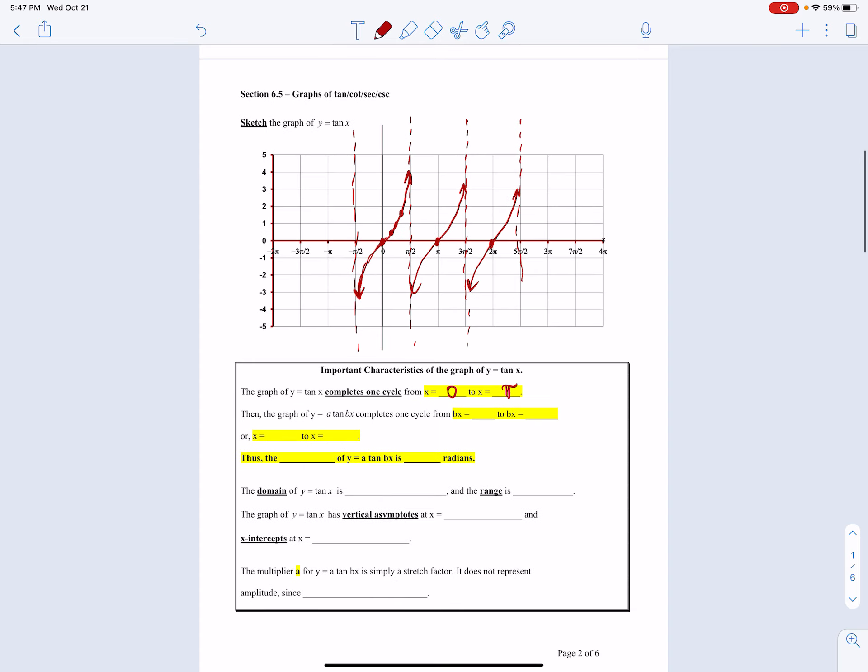If we replace x with bx, the angle has to go from 0 to π, which means 0 to π/b. So the period of y = tan(bx) is π/b radians, as opposed to 2π/b for sine and cosine.